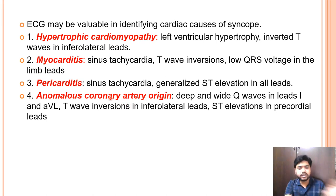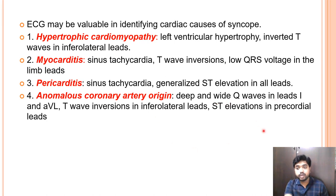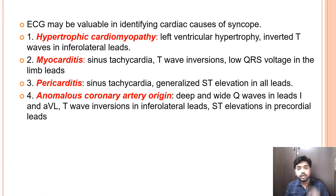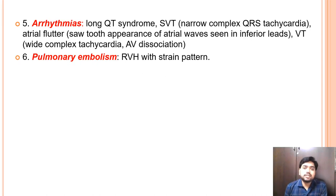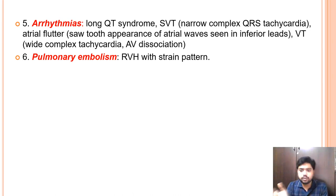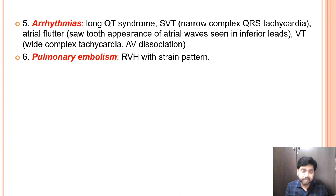ALCAPA (anomalous coronary artery origin from pulmonary artery) presents with characteristic ECG findings: deep and wide Q waves in leads I and aVL, T wave inversions, and ST elevations in precordial leads. This mimics myocardial ischemia because the coronary artery receives desaturated blood from the pulmonary artery. Arrhythmias in pediatric cardiac emergencies — narrow complex tachycardia, wide complex tachycardia, long QT, SVT, Brugada syndrome, and fibrillations — were discussed in Part 1; approach to wide complex tachycardia will be covered in the next session.